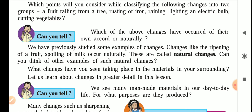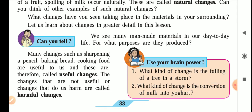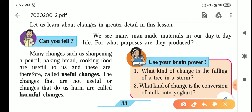If the fruit is on a tree it will ripen naturally. We see many man-made materials in our day-to-day life — plastic is common, as well as concrete and other things. Plastic is used for making chairs and other items; concrete is used for building. Many changes such as sharpening of a pencil, baking bread, and cooking food are useful to us and are therefore called useful changes.